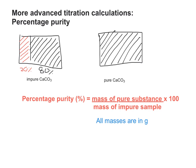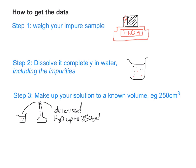So let's have a look at the step-by-step practical technique that you'd use to get the data you need and then do the calculation. First, weigh your impure sample and note the mass. Then dissolve that mass completely in water, including the impurities.